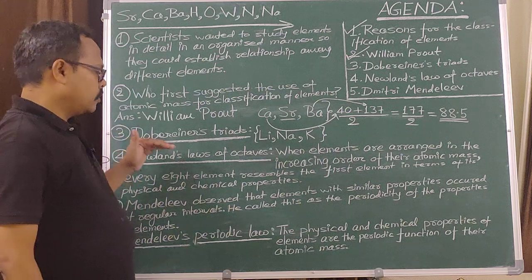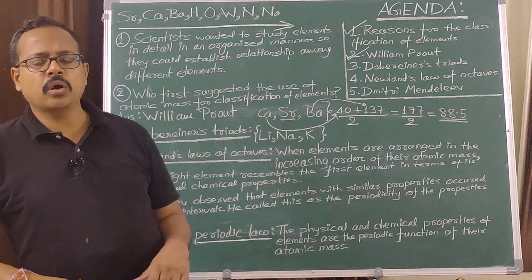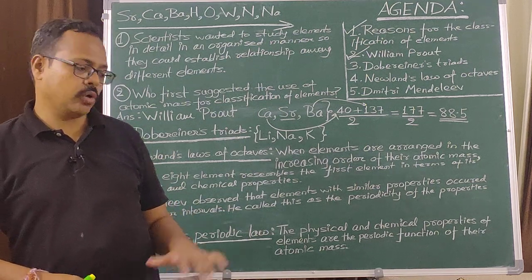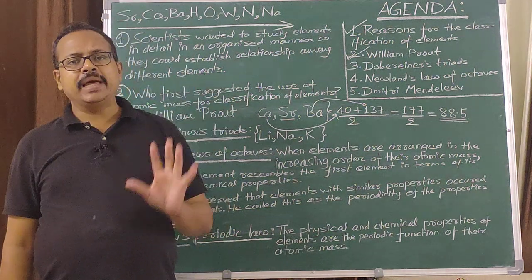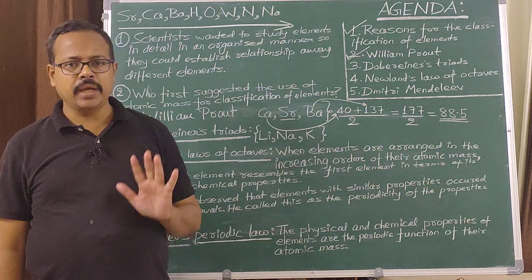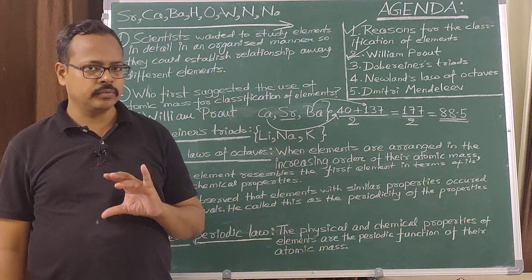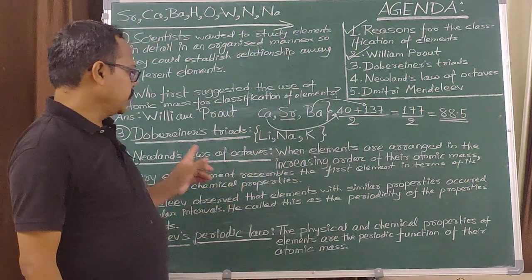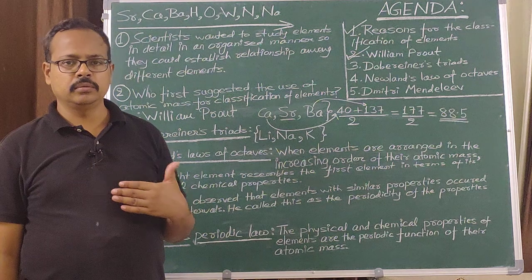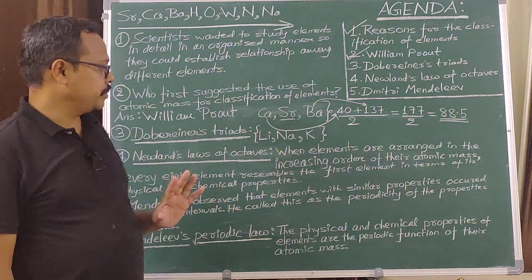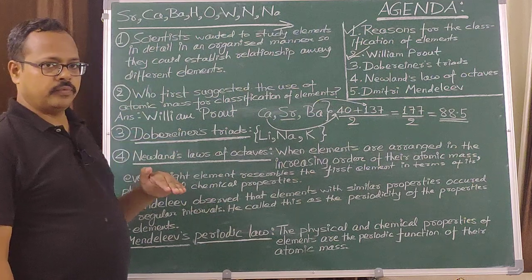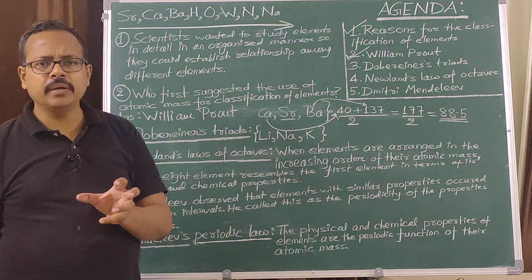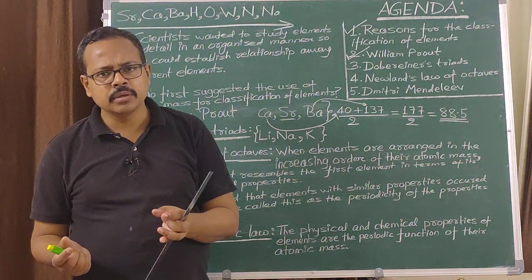However, Dobereiner's triads got discarded because all the then-known elements could not be fitted in the form of triads. Despite this, he made a very important contribution because he was the first scientist to prove that there is a clear relationship between the atomic weight of an element and its properties.